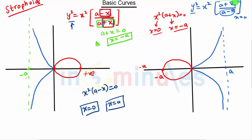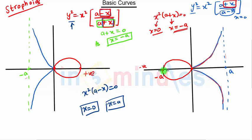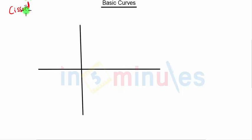So here, plus x in the numerator indicates the curve is on the positive side of the x-axis, and a-x in the denominator gives the asymptote. Finding the intersection on the x-axis gives the loop on the negative side. These are the two very famous strophoid curves.